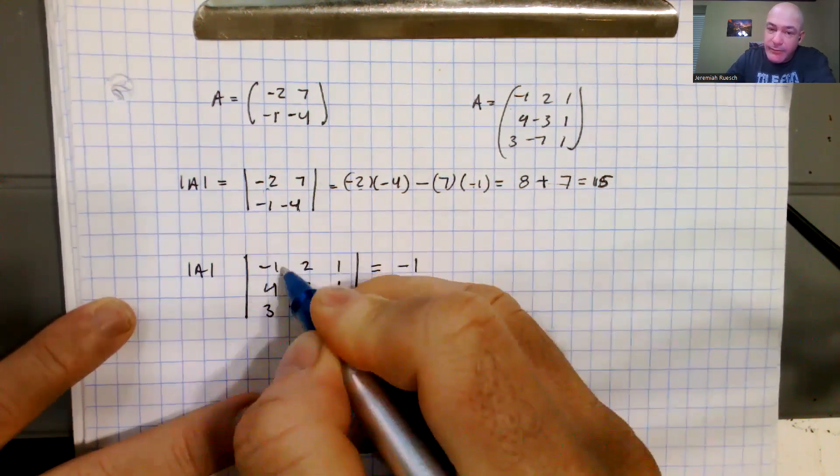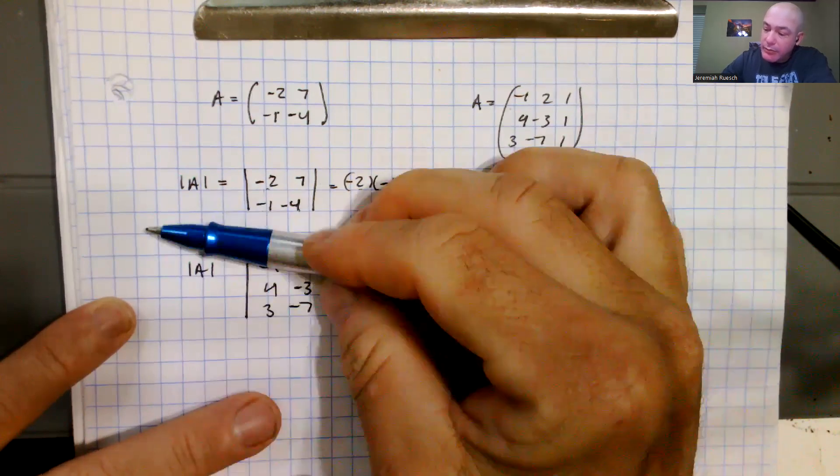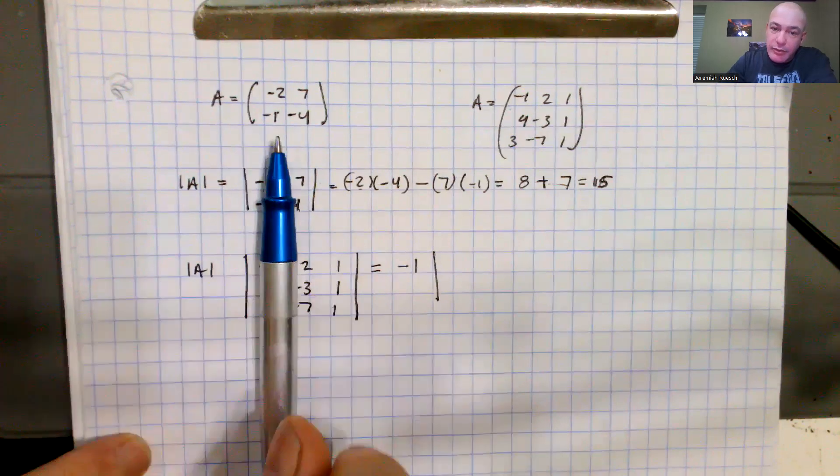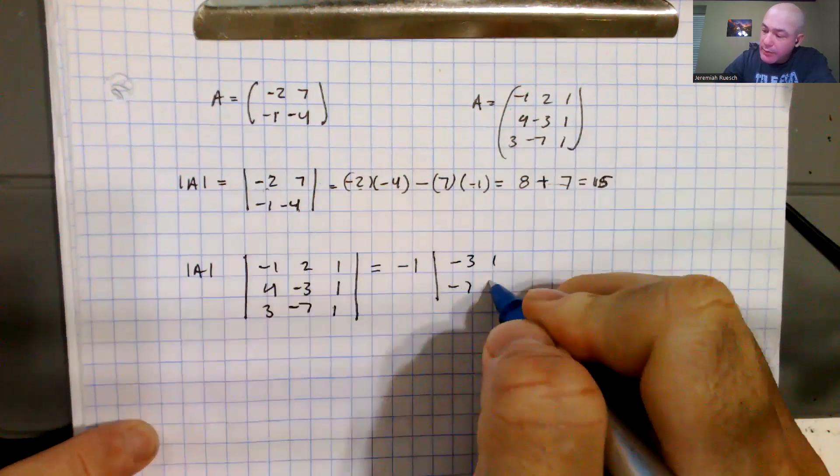Okay, so I have negative 1, and that's going to make me this first element. I'm going to multiply it by the submatrix, so deleting this row and this column, and you get that little 2 by 2 there. So this is going to be a negative 3, 1, negative 7, 1.